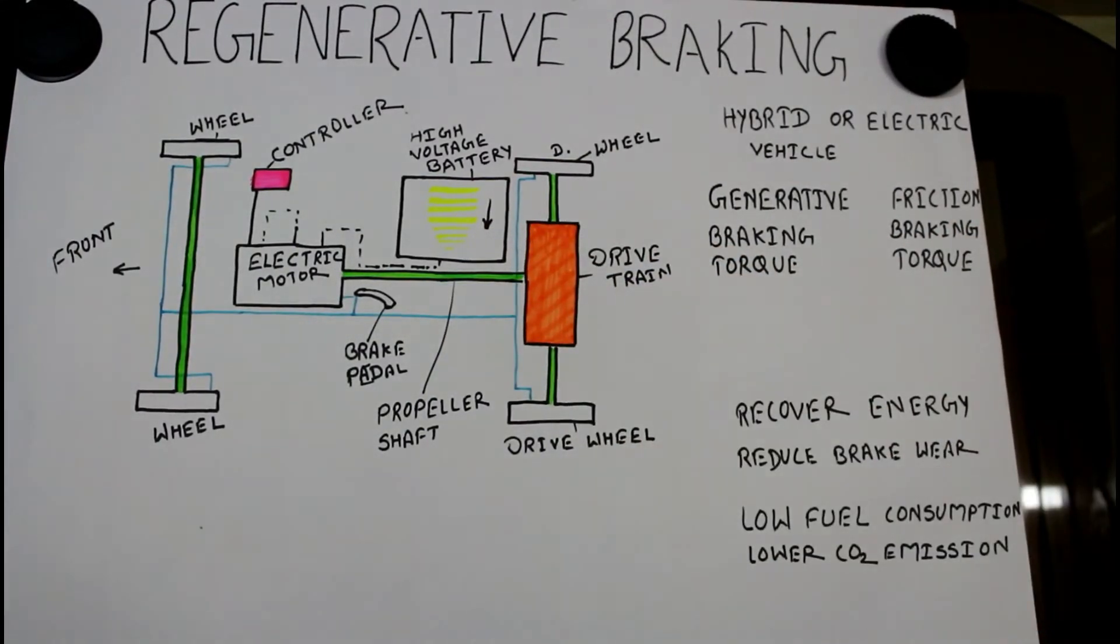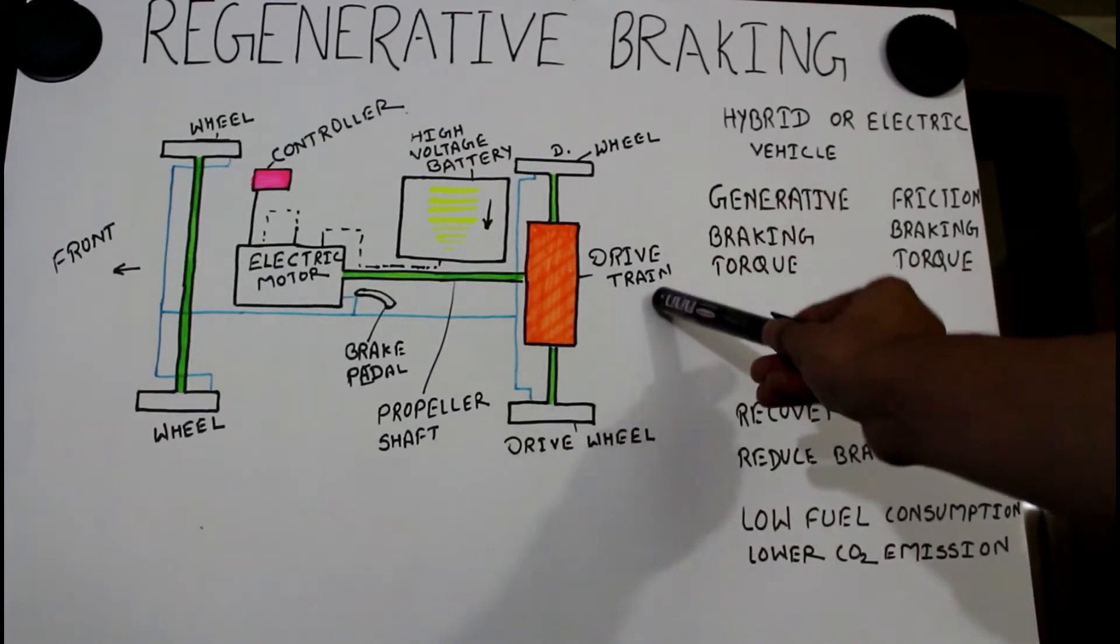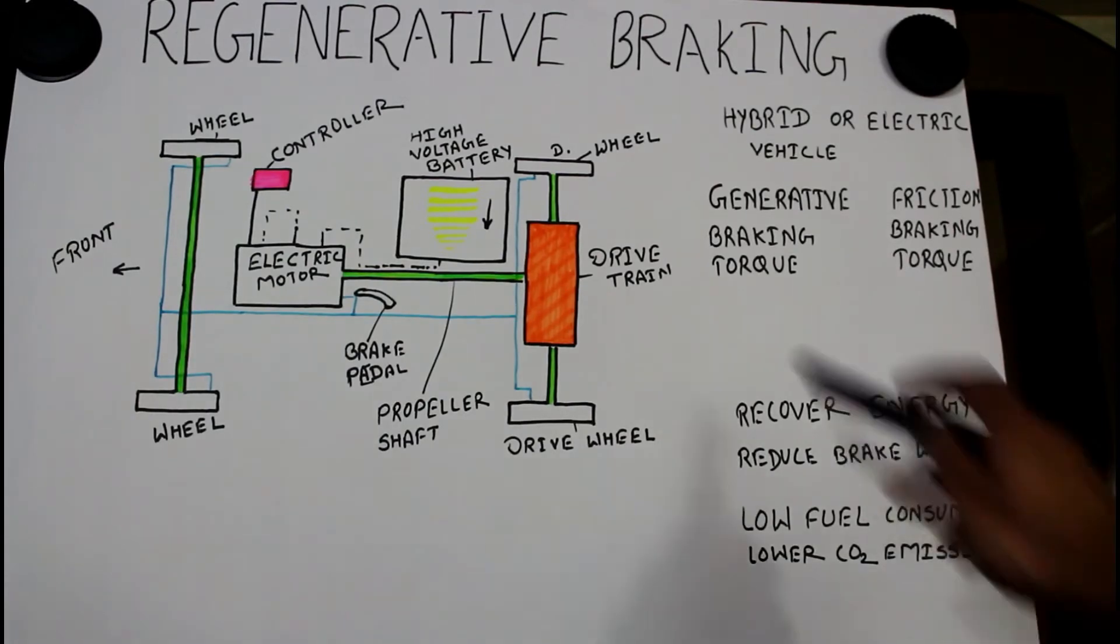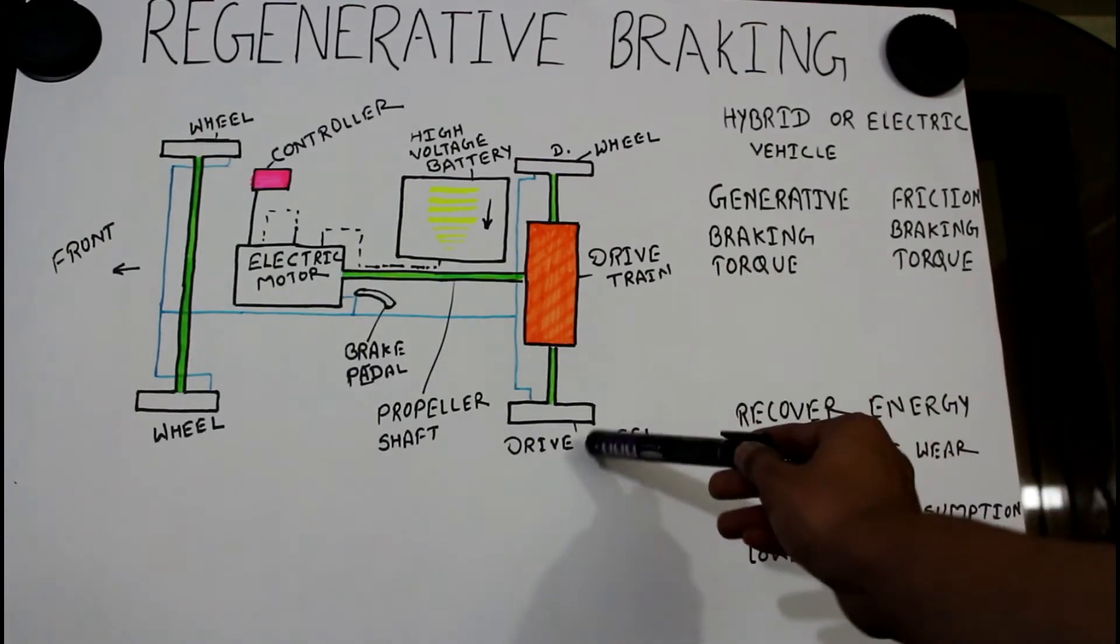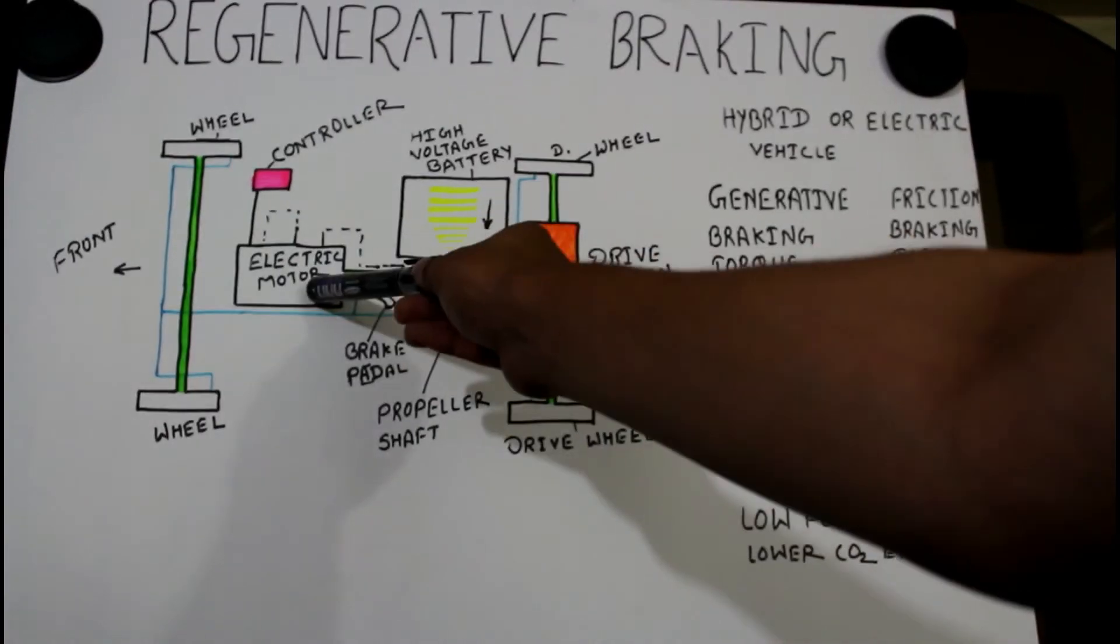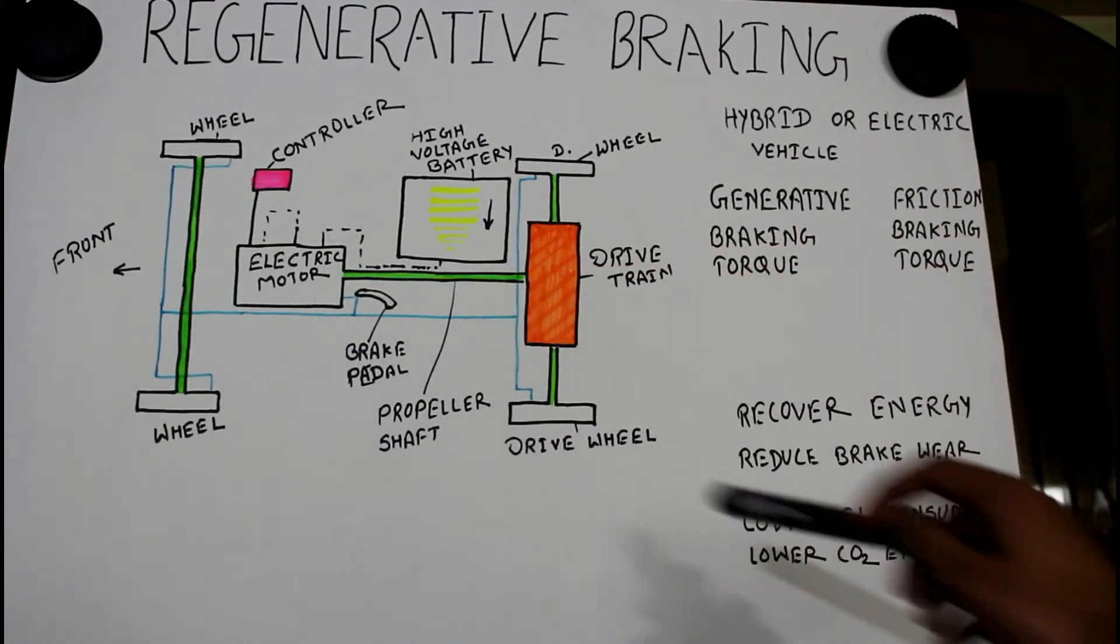Now, drive is passed through drive wheel via drivetrain to the generator. The drivetrain takes drive from the drive wheel and passes it through the propeller shaft to the generator. The generator converts the mechanical work into electrical energy.